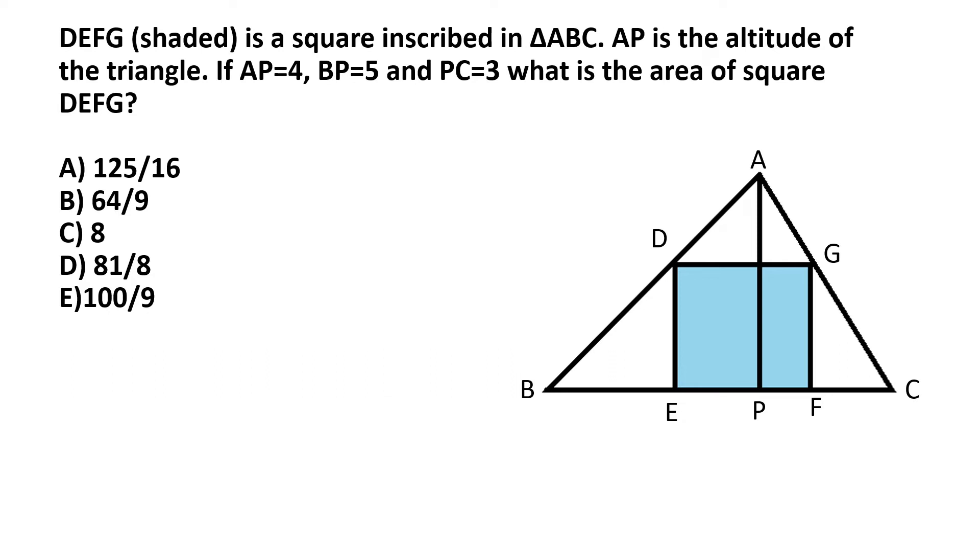DEFG is a square inscribed in triangle ABC. AP is the altitude of the triangle. If AP is equal to 4 and BP is equal to 5 and PC is equal to 3, what is the area of square DEFG?